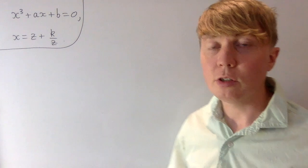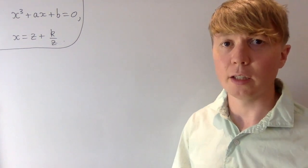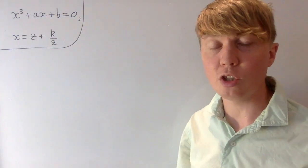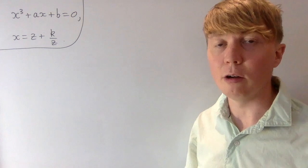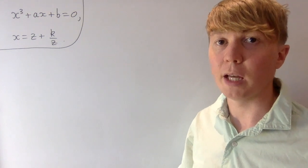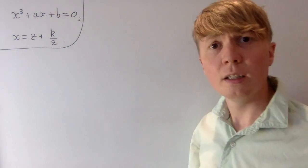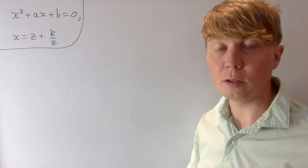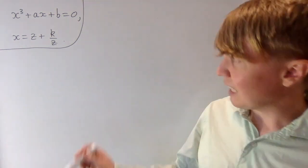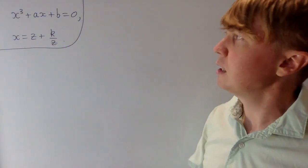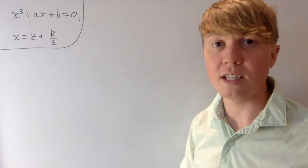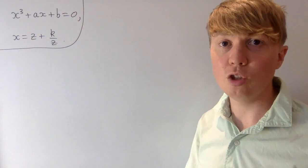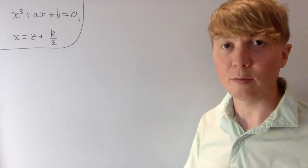How did we know this substitution was going to be helpful, and can we apply this method more generally? This method is called Vieta's substitution, and it requires the cubic to be in depressed form — coefficient of x cubed is 1, coefficient of x squared is 0. Any cubic can be transformed into this form by a change of variables. The key idea is to replace x by z plus k over z, which turns things into a degree-6 equation in z, and a clever choice of k turns it into a quadratic in z cubed, which we can solve to find z, then x.